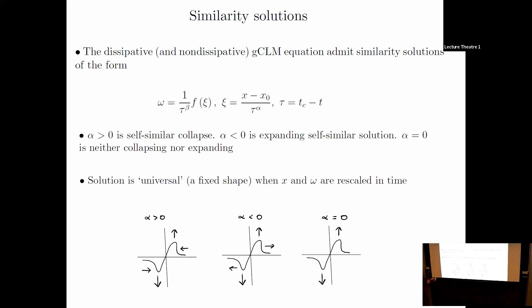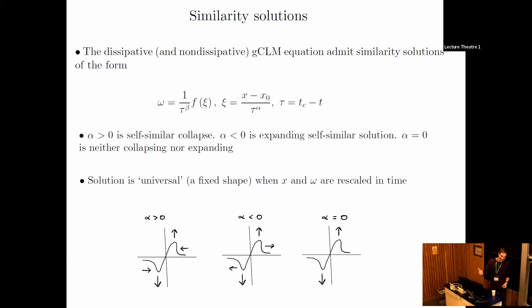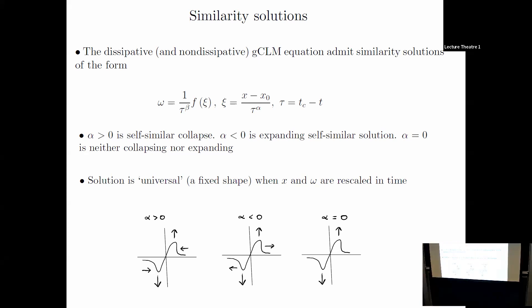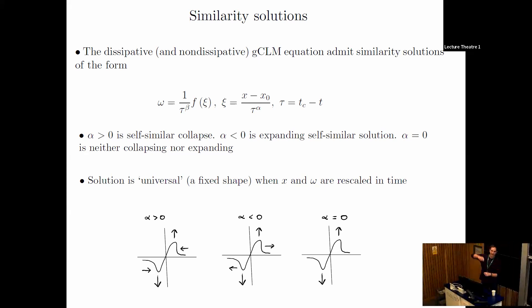We find solutions where alpha is greater than zero, corresponding to self-similar collapse. We find both exact similarity solutions and local similarity solutions, where the self-similar form holds in a space-time neighborhood of the blowup. Alpha greater than zero means self-similar collapse: the support of the solution shrinks and the amplitude grows to infinity.